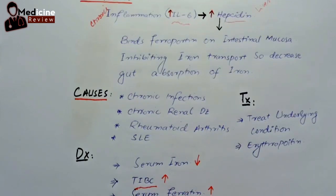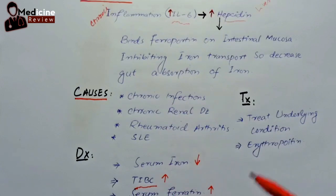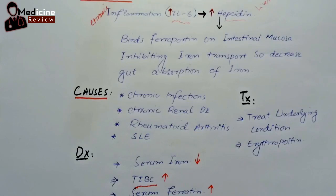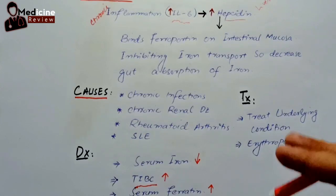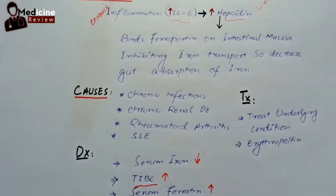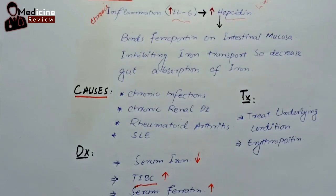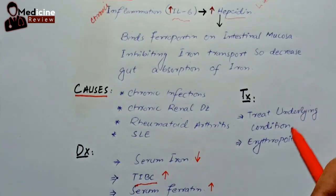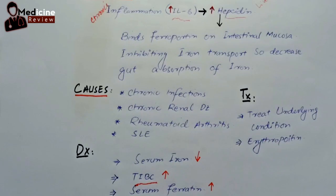Serum ferritin is the storage form of iron. Now regarding treatment — it is very simple: treat the underlying cause, whether it is an infectious, inflammatory, or autoimmune disease. Just treat the cause and the process will reverse, and the anemia will resolve by itself.